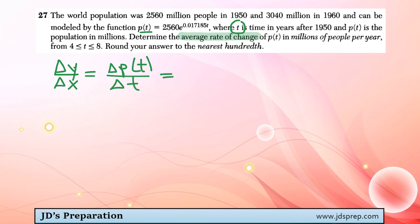So to do this, we're looking for the average rate of change from t being from 4 to 8. So that means in our denominator, it would be 8 minus 4. And in the numerator, it would be p of 8 minus p of 4.